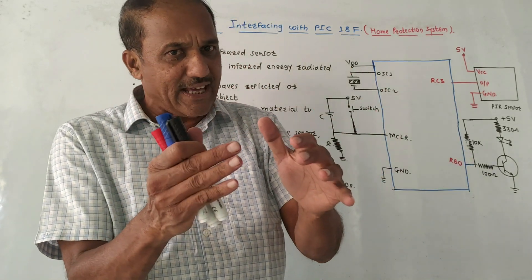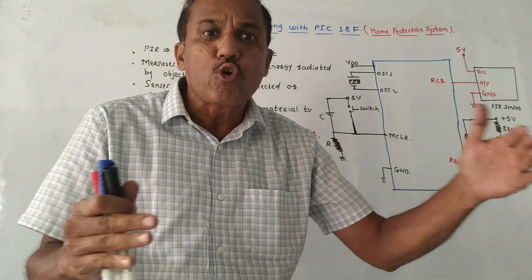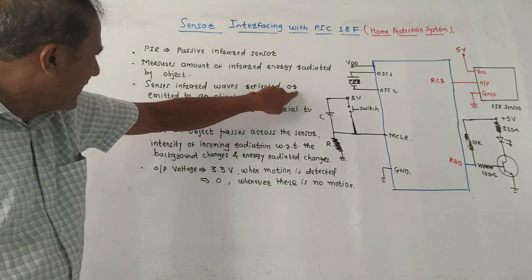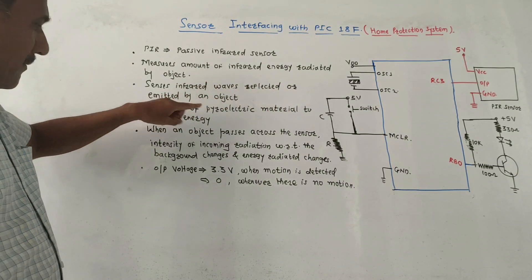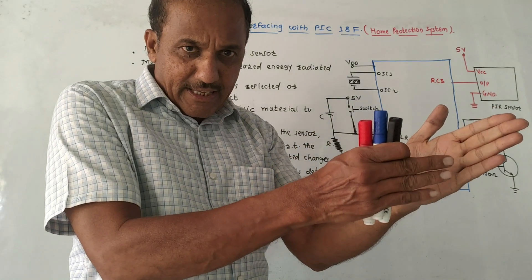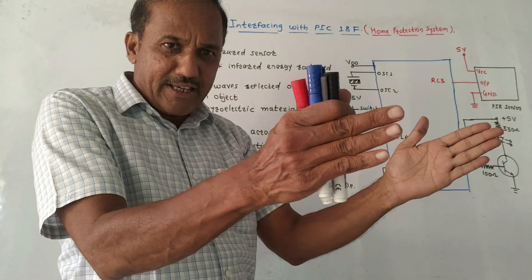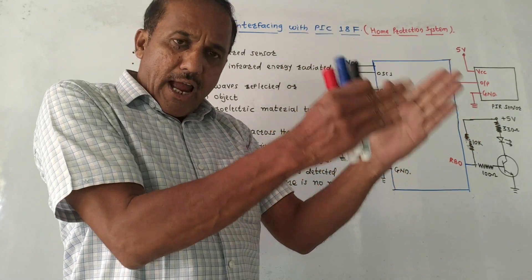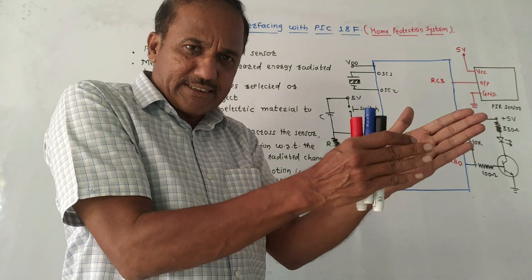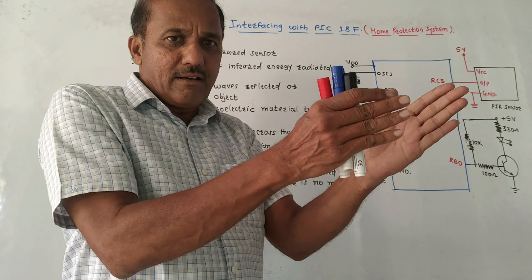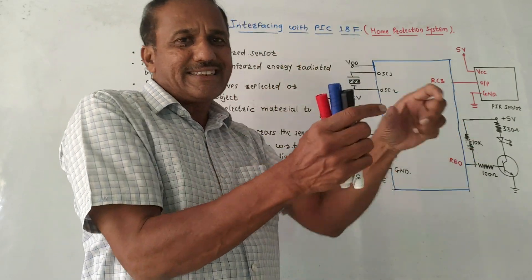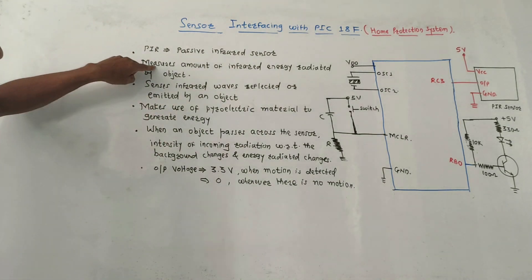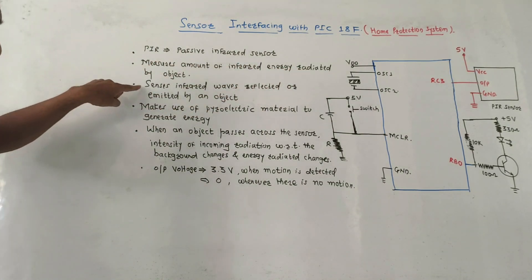The PIR sensor can be used to detect the motion of objects as well as the motion of human beings. It senses infrared waves reflected or emitted by an object. Normally light will be falling on that sensor, and if there is some object in between, the amount of light falling on the sensor will change, and accordingly we will get the detection.